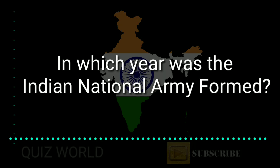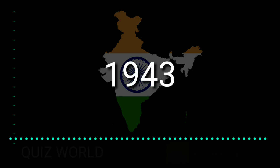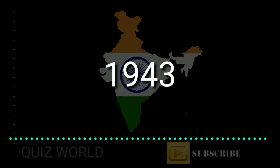In which year was the Indian National Army formed? Answer is 1943. In 1943, the Indian National Army was formed.